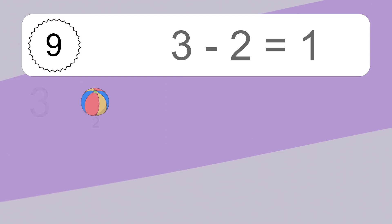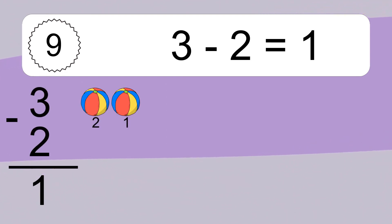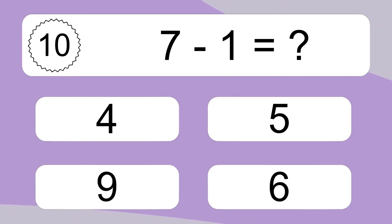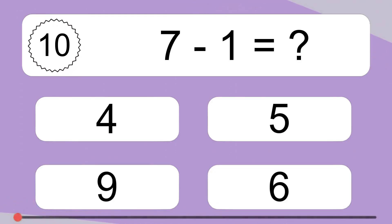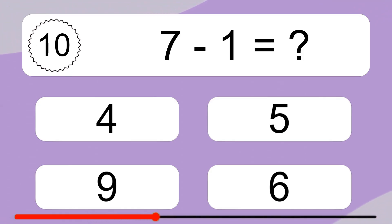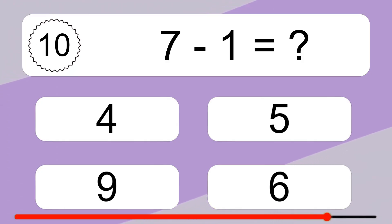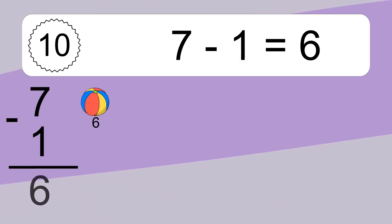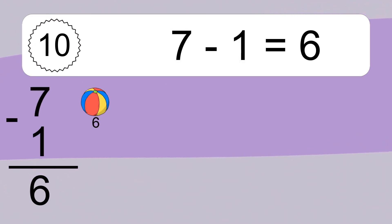3 minus 2 equals what? 3 minus 2 equals 1. Let's count it: 2, 1. 7 minus 1 equals what? 7 minus 1 equals 6. Let's count it: 6.